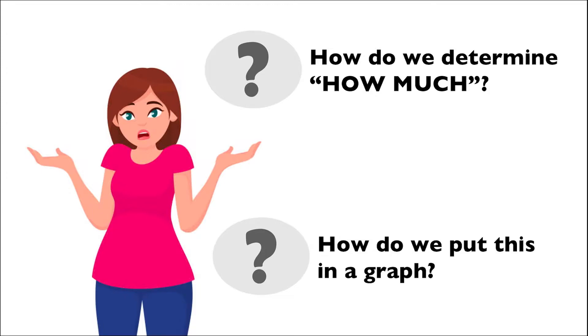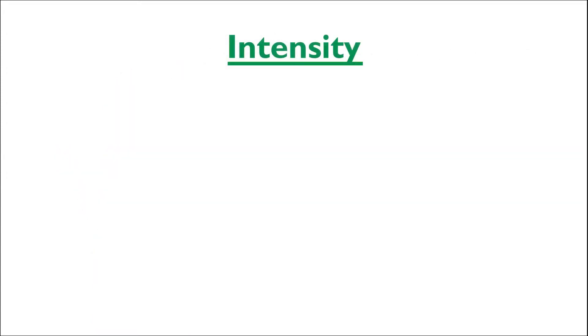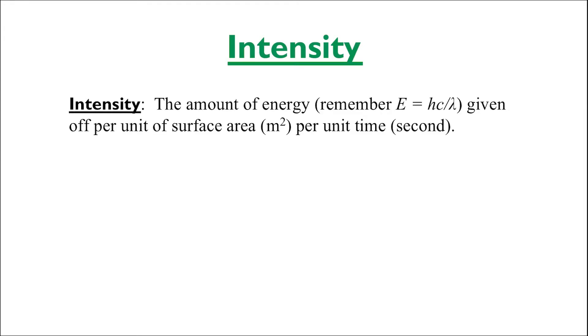By measuring how intense the light can be. The intensity of light of a particular wavelength in terms of astronomy is a measure of the amount of energy given off by a single unit of surface area of the object that's emitting the light per unit time.